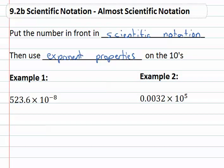In other words, when we see 523.6 times ten to the negative eighth, that's scientific-ish. The problem is the decimal is in the wrong spot.